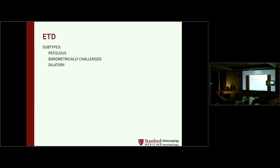Now let's talk about eustachian tube dysfunction. A consensus statement by the AAO divides eustachian tube dysfunction into three broad categories: patulous, where the eustachian tube is excessively large; barometrically challenged, where the audiogram or tympanometry is essentially normal at sea level; and dilatory dysfunction. Dilatory dysfunction is further divided into several subcategories.